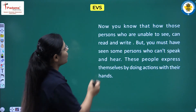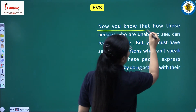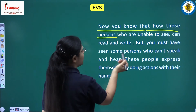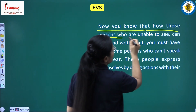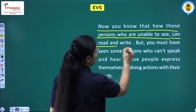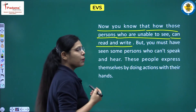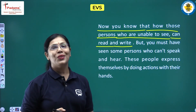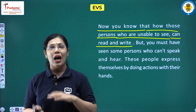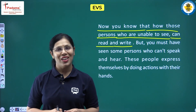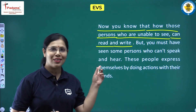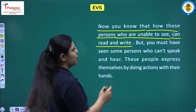Now you know how persons who are unable to see can read and write. Those persons who are unable to see are able to read and write with the help of this script named Braille script.